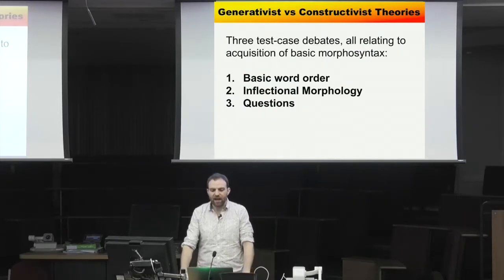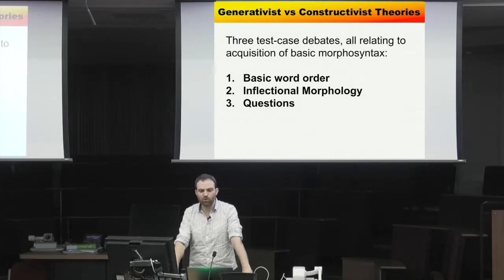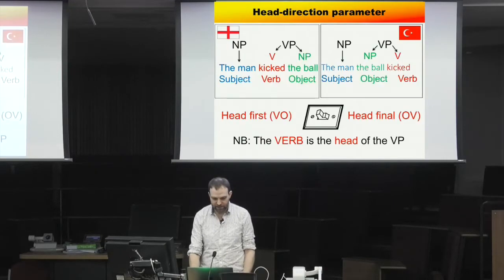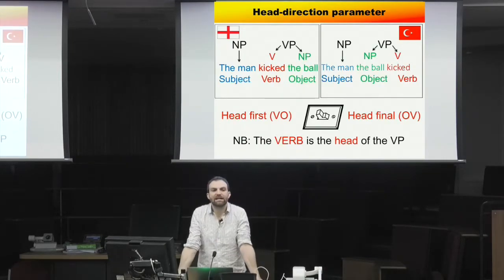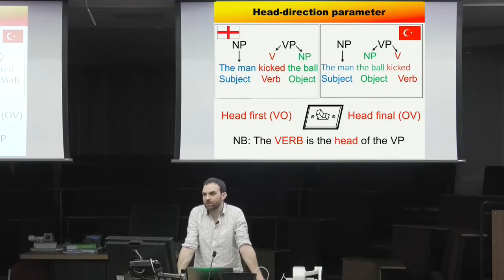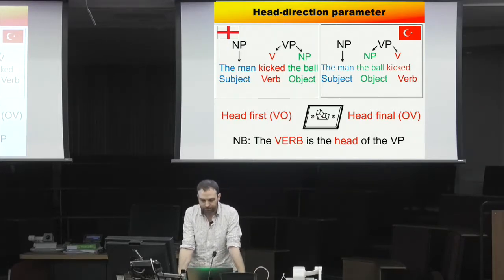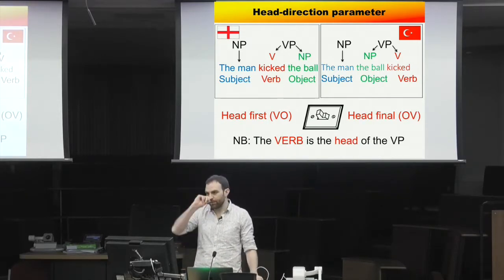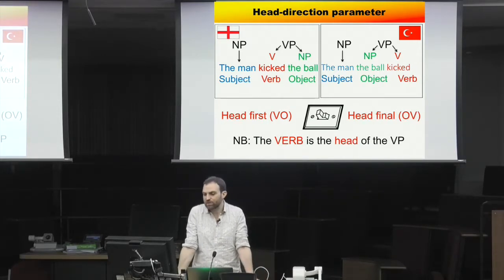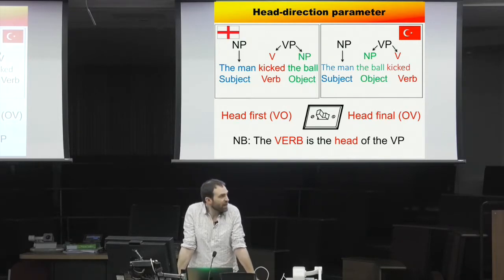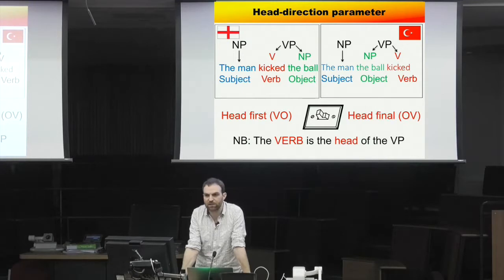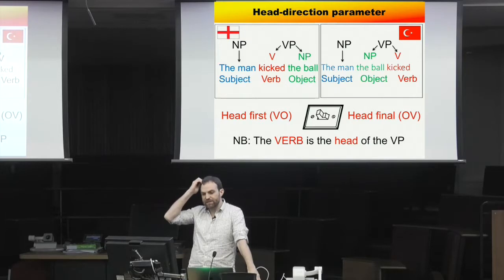We'll look at three test-case debates relating to basic morphosyntax. First: how children acquire word order, which is especially important in languages like English where word order conveys who did what to whom. In English, how do children learn that the language follows subject-verb-object order? The classic generativist answer is that children are born with word order parameters that they set on the basis of the language they hear.